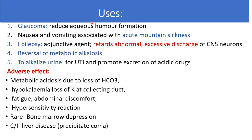Uses of carbonic anhydrase inhibitors include glaucoma to reduce aqueous humor formation, nausea and vomiting associated with acute mountain sickness, epilepsy as adjuvant therapy to retard abnormal excessive CNS neuronal discharge, reversal of metabolic alkalosis, and alkalizing urine for urinary tract infections and to promote excretion of acidic drugs. Adverse effects include metabolic acidosis due to loss of bicarbonate, hypokalemia due to potassium loss at the collecting duct, fatigue, abdominal discomfort, hypersensitivity reactions and rarely bone marrow depression. Contraindicated in liver disease.